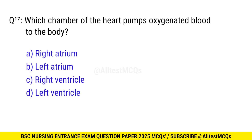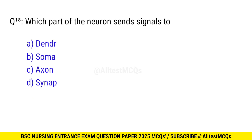Question No. 17: Which chamber of the heart pumps oxygenated blood to the body? The correct option is D: Left ventricle. Question No. 18: Which part of the neuron sends signals to the next cell? The right option is C: Axon.